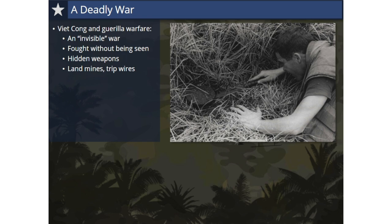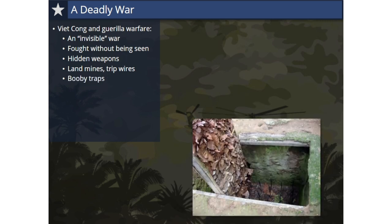Two common landmines were the bouncing betty and the toe popper. With the bouncing betty, when soldiers stepped on the hidden device, it would arm, and when they released pressure by removing their foot, it would send explosives into the air. With the toe popper, a shell was buried in the ground with just the tip protruding; the shell sat on a nail or firing pin, and when stepped on, the shell would shoot into the soldier's foot. Thousands of soldiers were killed from stepping on hidden landmines.